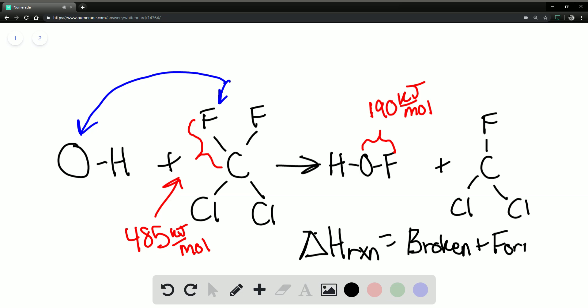then what we need to take into account is that this will be a negative number because we need this amount of energy. So the total delta H will be 485 minus 190, which will be 285 kilojoules per mole.